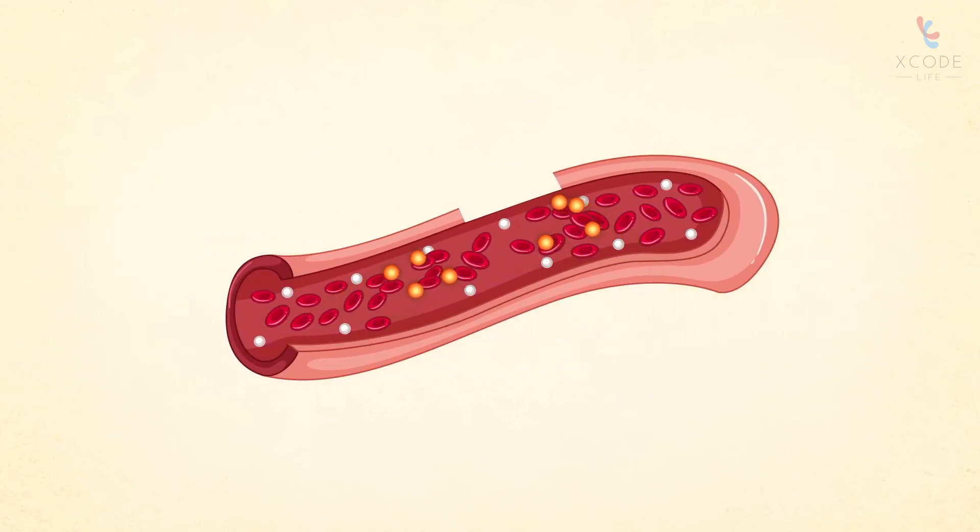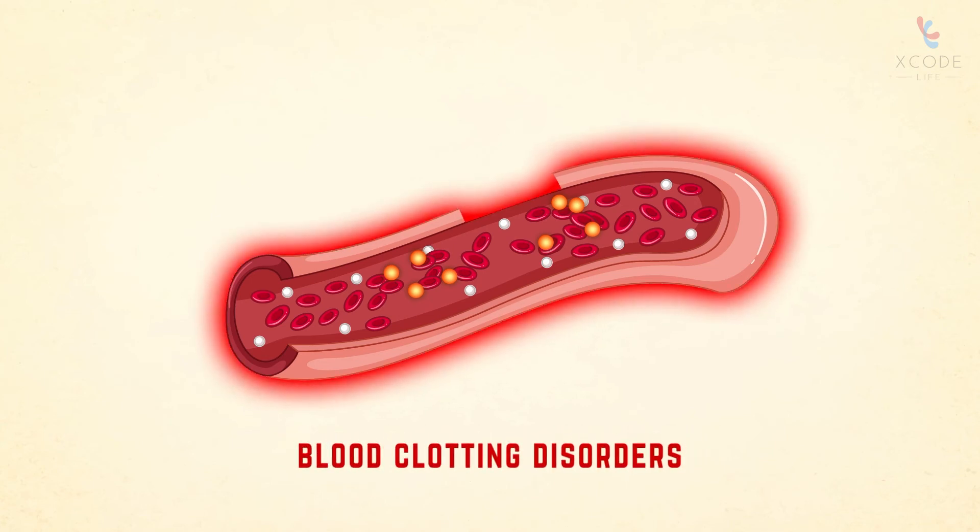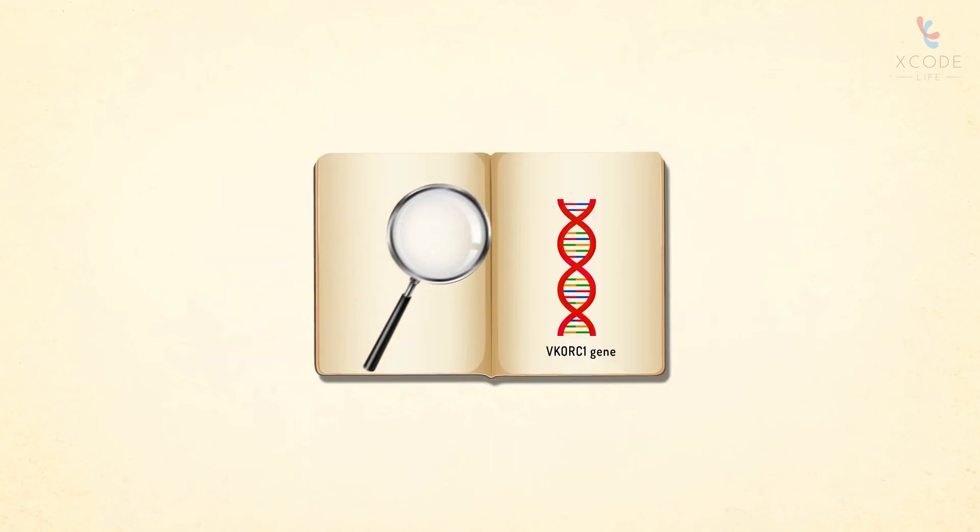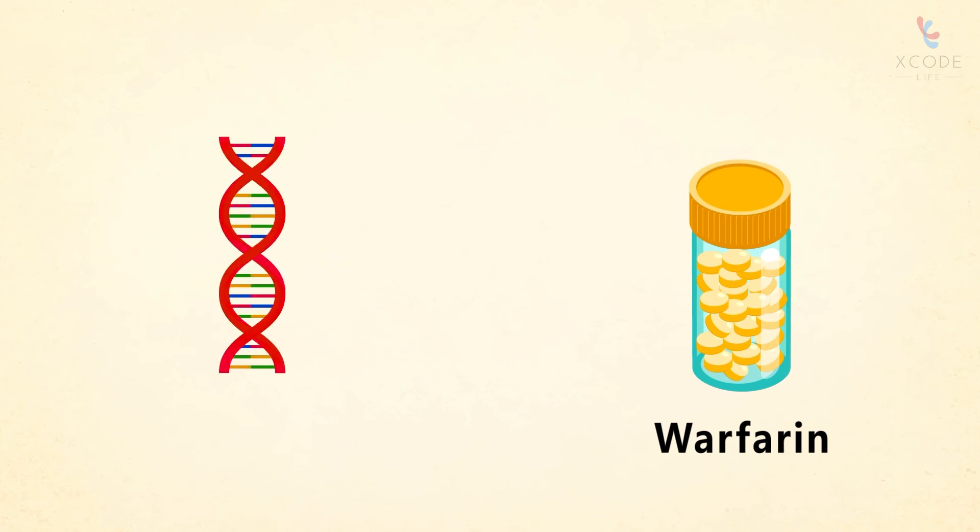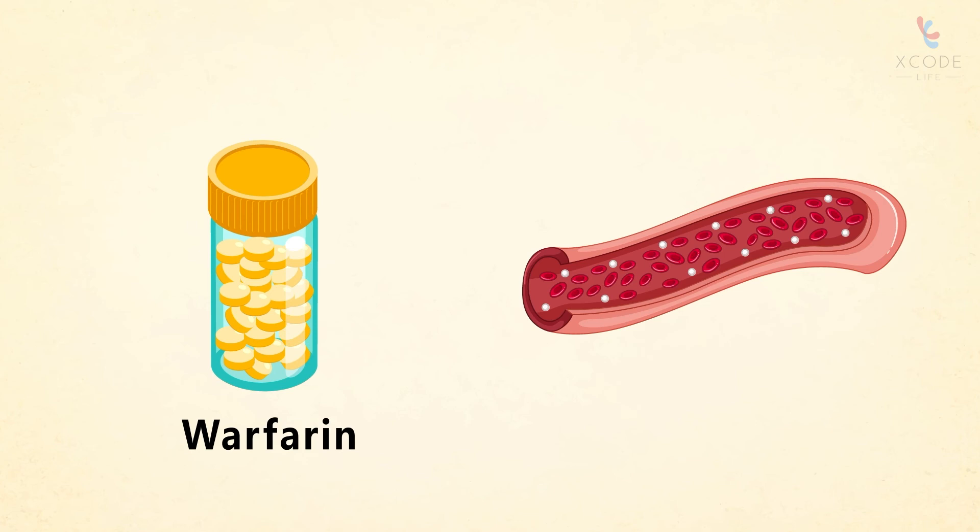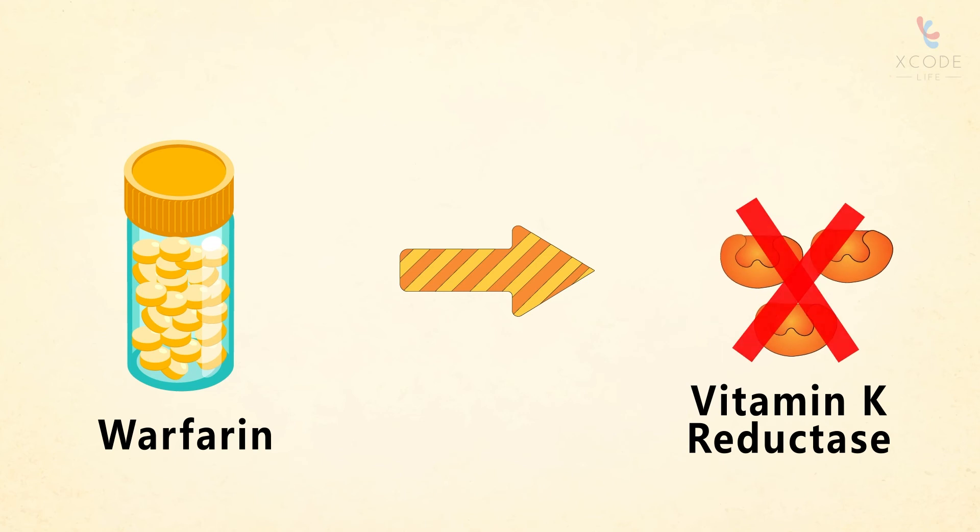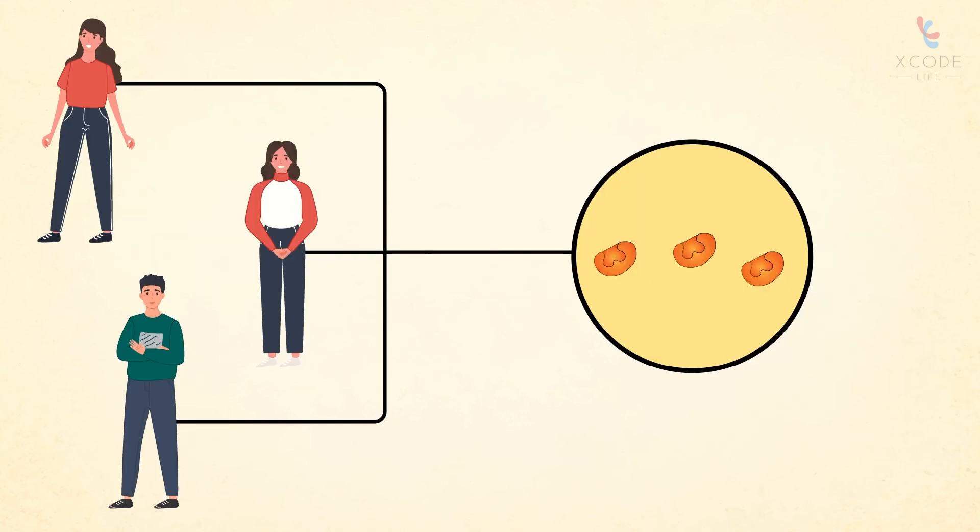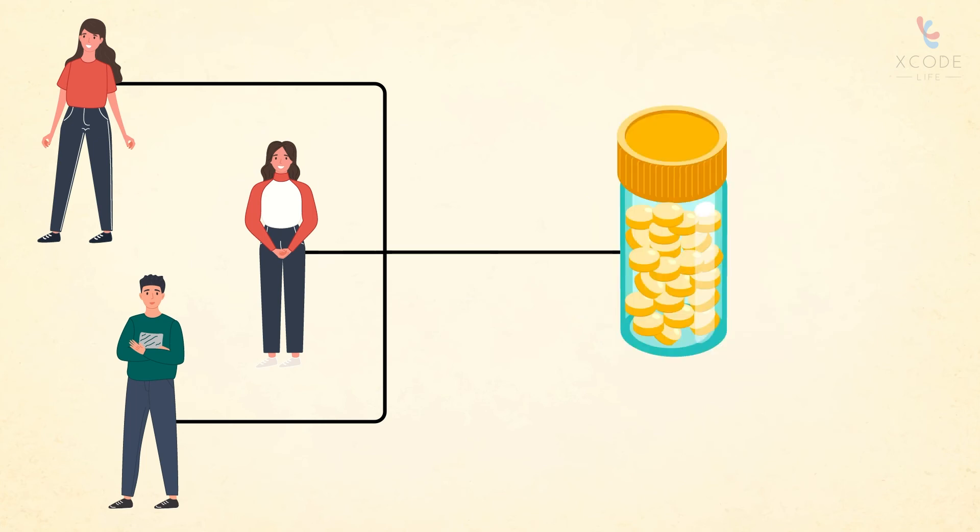The VKORC1 gene is a well-researched gene in pharmacogenomics. This gene has been known to influence the dosage requirement of warfarin. Warfarin is a drug used as a blood thinner to treat blood clots. This drug works by inhibiting the activity of the vitamin K reductase enzyme. For people who already have lower levels of vitamin K reductase enzyme, the normally prescribed dose of warfarin can be dangerous, as it can lead to severe bleeding and bruising.